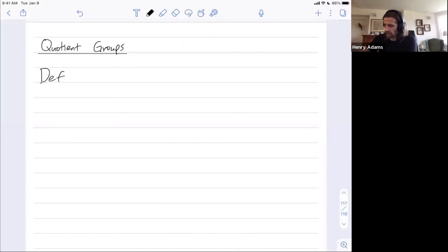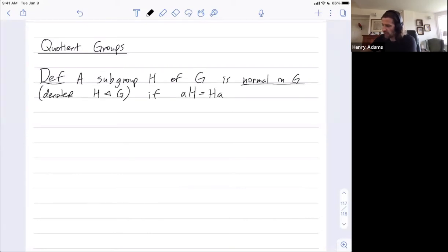I think I've mentioned before the definition of a normal subgroup. This is due to Galois. A subgroup H of a group G is normal in G, denoted H is normal in G with that triangle symbol, if the left coset AH is equal to the right coset HA for all elements A in G.